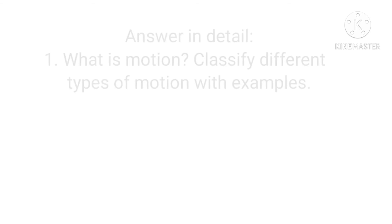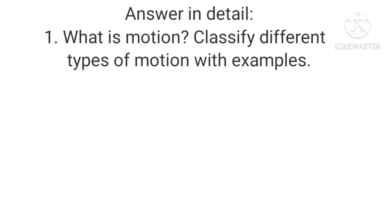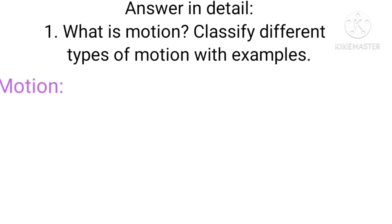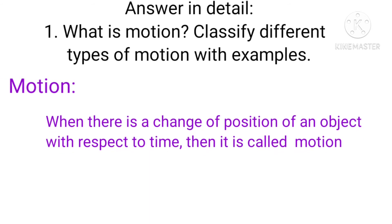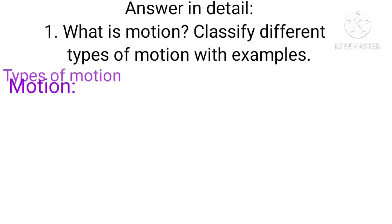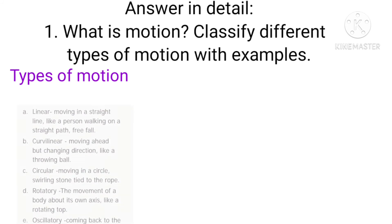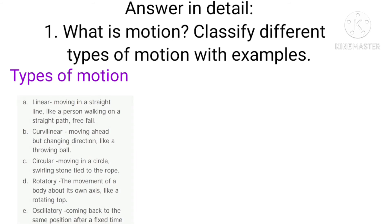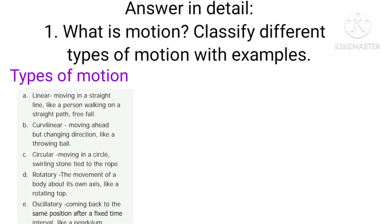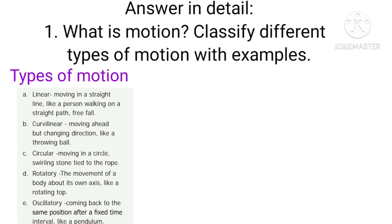Next, answer in detail: what is motion? Classify different types of motion with examples. When there is a change in the position of an object with respect to time, it is called motion. Types of motion: first, linear motion — motion in a straight line; example: a person walking on a straight path. Second, curvilinear motion — motion of a body moving ahead but changing direction; example: a ball thrown. Third, circular motion — motion in a circle; example: a stone tied to a rope.